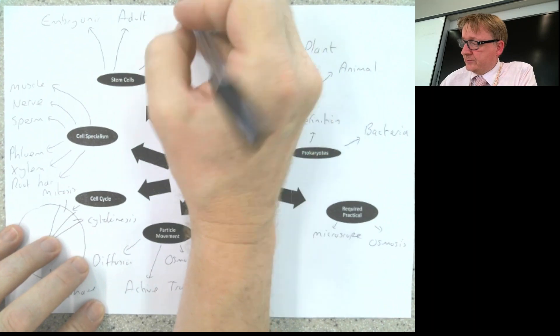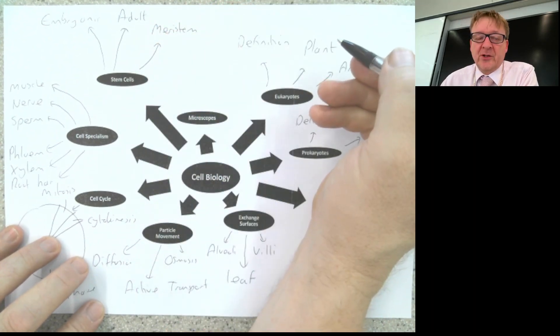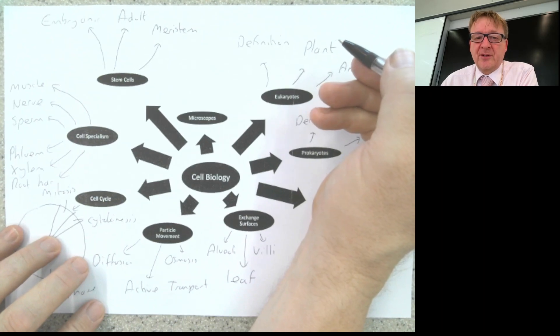For stem cells in a plant, we've got meristem. They are the growing part or growing point in a plant.